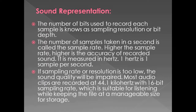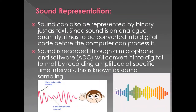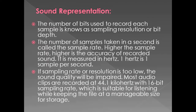The number of bits used to record each sample is known as sampling resolution or bit depth. The number of samples taken in one second is known as the sample rate. A higher sample rate means higher accuracy and quality of recorded sound, but also a larger file size. It is measured in hertz — one hertz is one sample per second. If sampling rate or resolution is too low, sound quality will be impaired. Most audio clips are recorded at 44.1 kilohertz with 16-bit sampling resolution, which is suitable for listening while keeping the file at a manageable size.